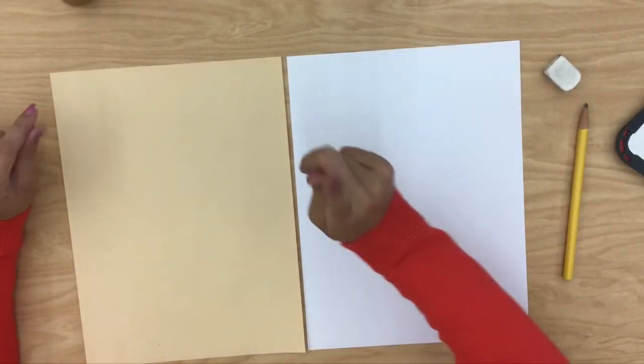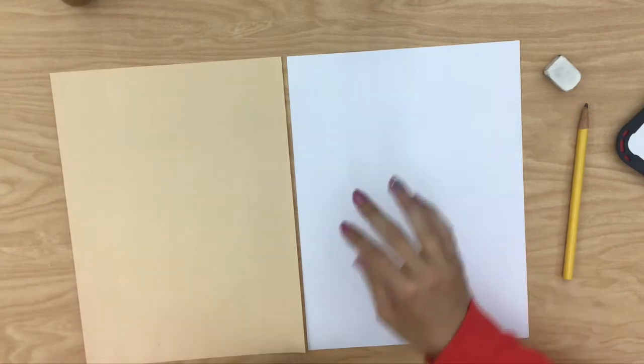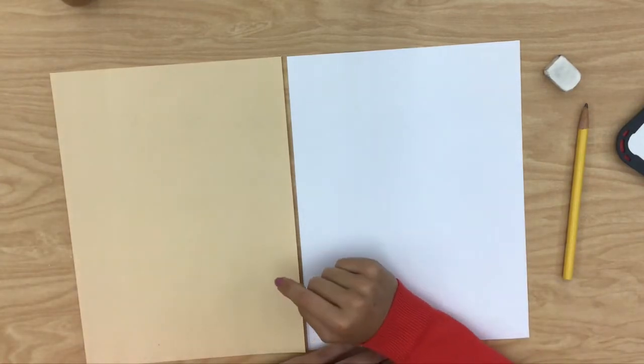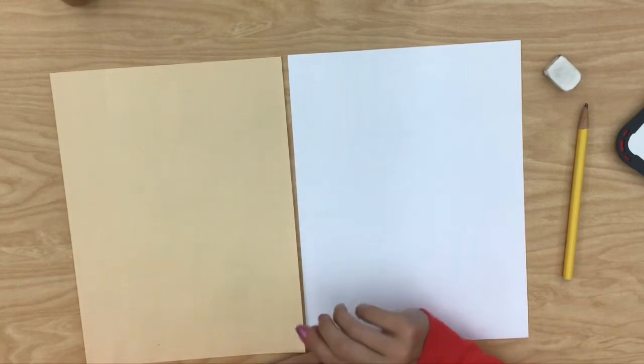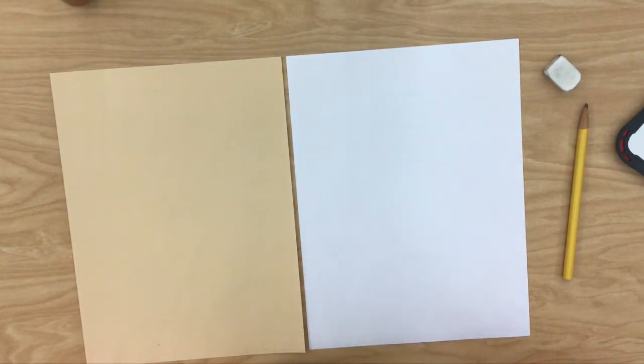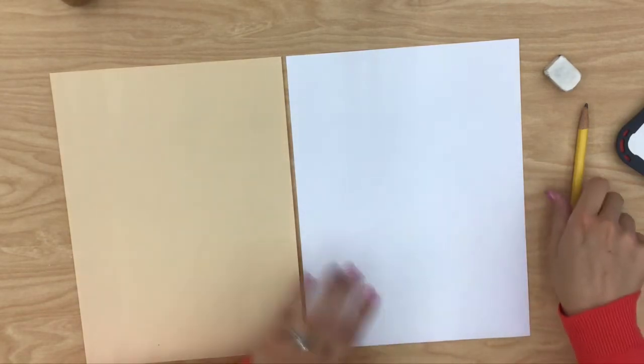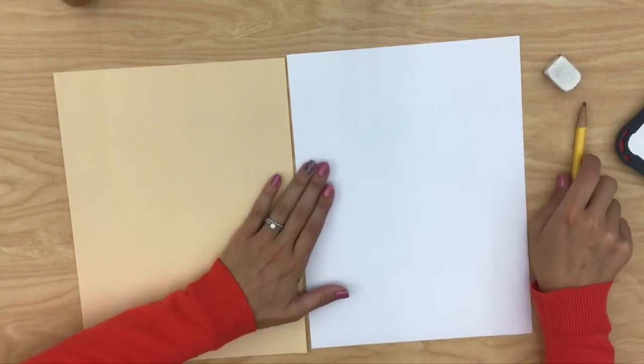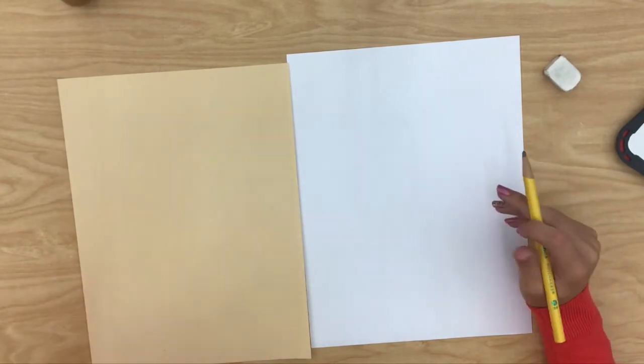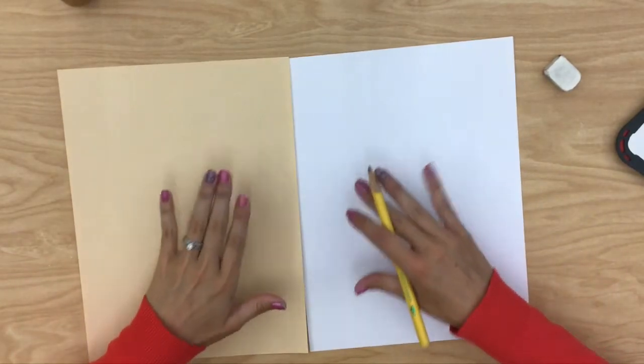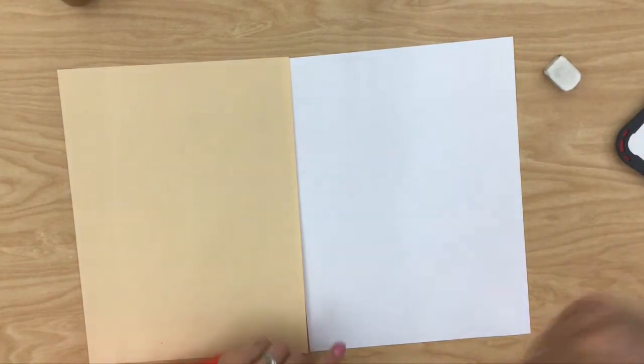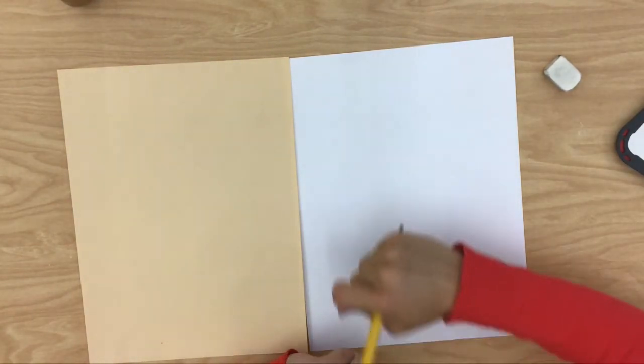Before I get started drawing some things for our shape robot, please remember that if any time I go too fast you could pause my video and you could rewind and rewatch. Also remember what I draw on my paper can be different from yours because we're all artists and we have our own creative ideas in our mind.